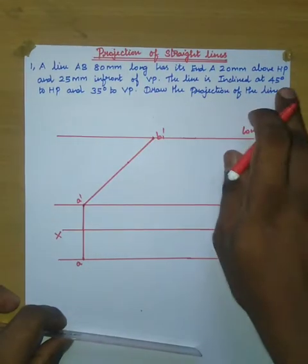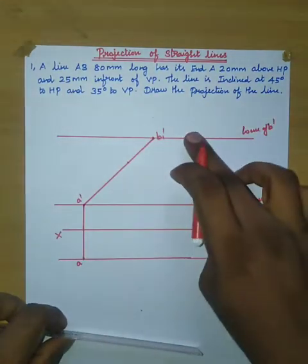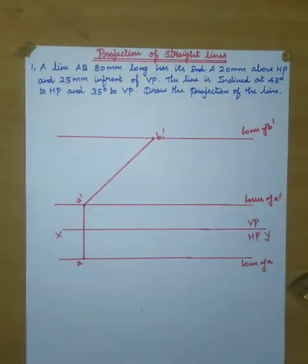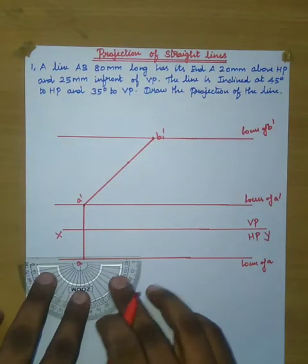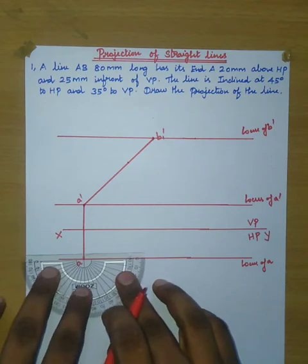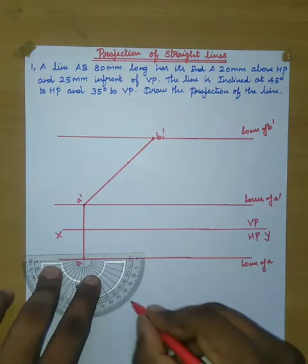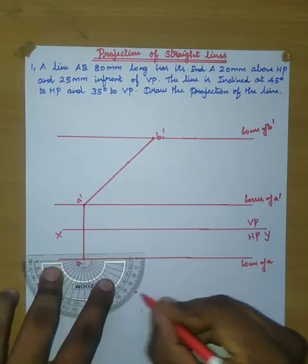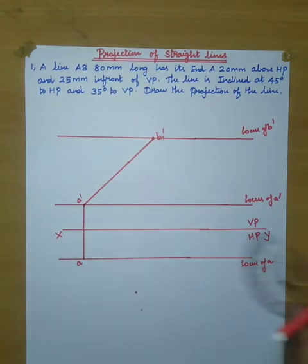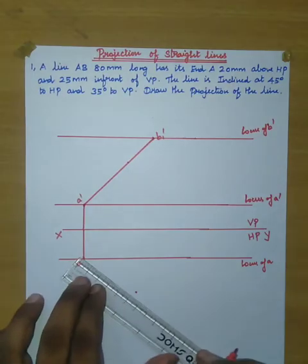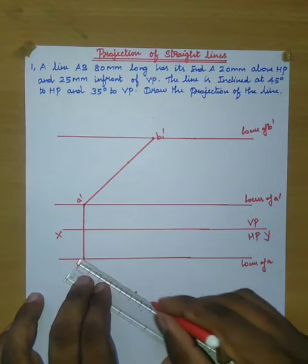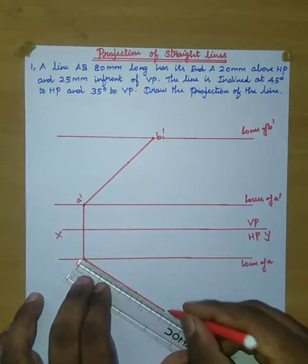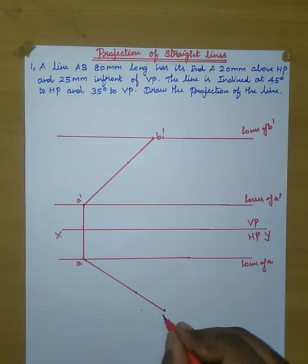Now, the line is inclined at 45 degrees to HP and 35 degrees to VP. For the top view, the inclination angle is 35 degrees to VP. At point A in the top view, place the protractor and draw at 35 degrees. Draw the 80mm line and mark this point as B2.